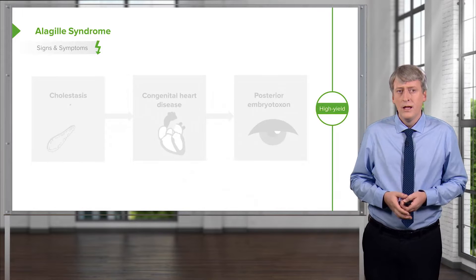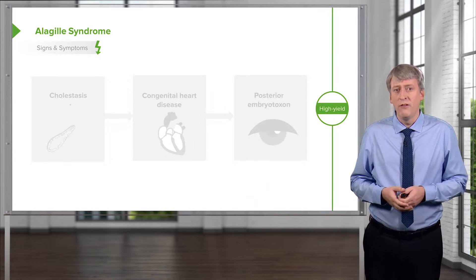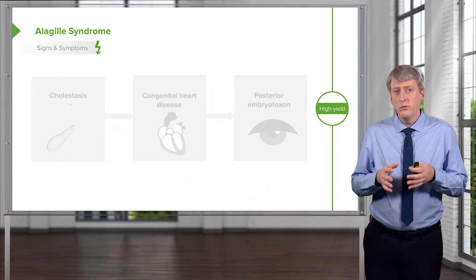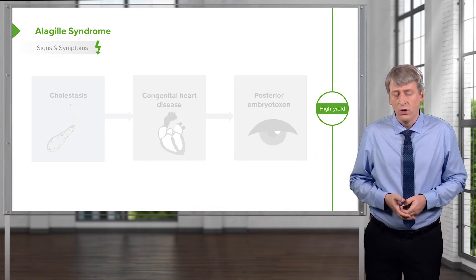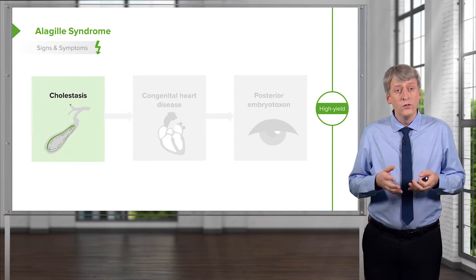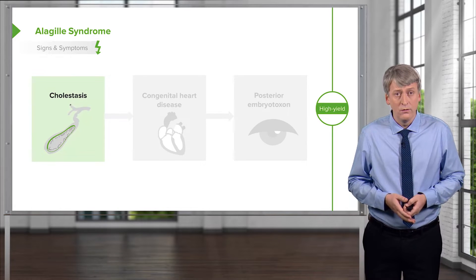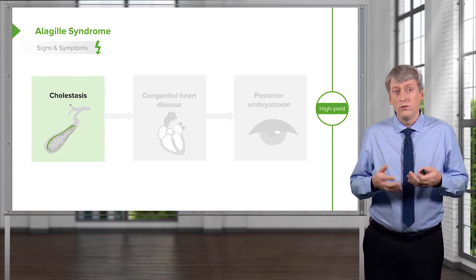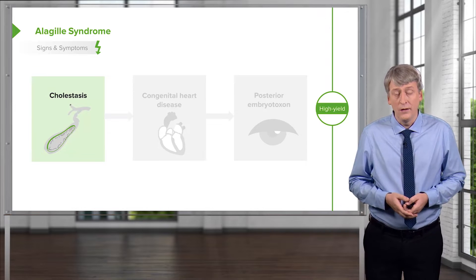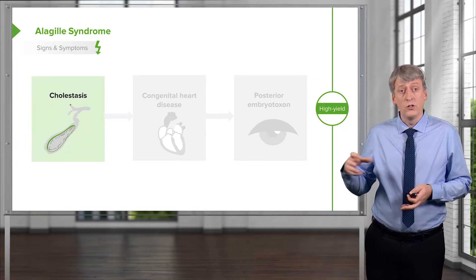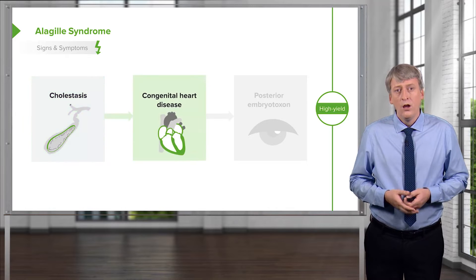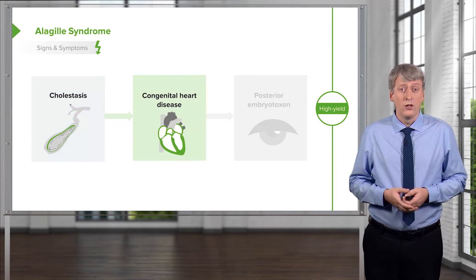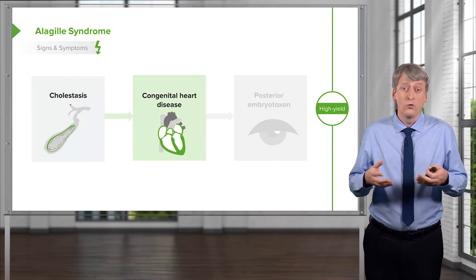Let's look at Alagille Syndrome a little bit more carefully. The signs and symptoms are generally related to a number of different organs that can be involved. First, we will see cholestasis in these children — they will have a conjugated hyperbilirubinemia, and that cholestasis may result in liver problems as well. Frequently, these children have congenital heart disease, something like Tetralogy of Fallot.